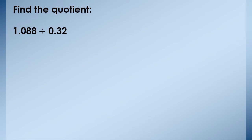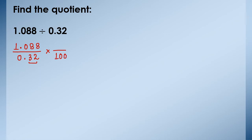Next question is 1.088 divided by 0.32. So write it as 1.088 upon 0.32. Again two places are there after decimal in the divisor. So we have to multiply the denominator by 100 and numerator also by 100. So this decimal will be shifted two places to the right side and it will be eliminated. In the numerator also the decimal will be shifted two places to the right side. So we have 108.8 upon 32.